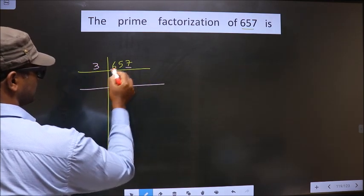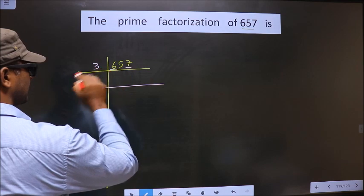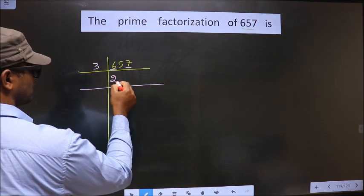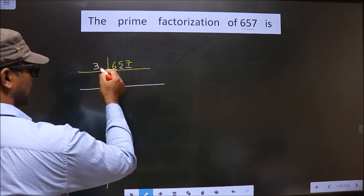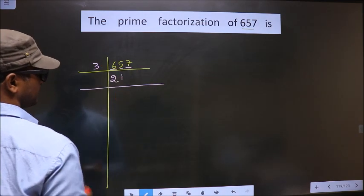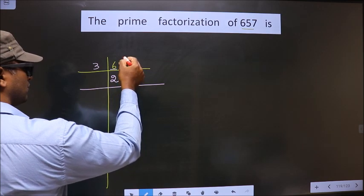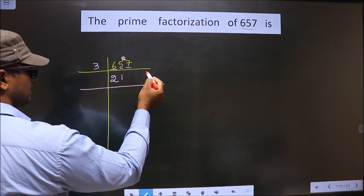Now, first number is 6. When do we get 6 in the 3 table? 3 times 2 is 6. Next number is 5. Now, a number close to 5 in the 3 table is 3 times 1 is 3. 5 minus 3 is 2, carried forward making it 27.